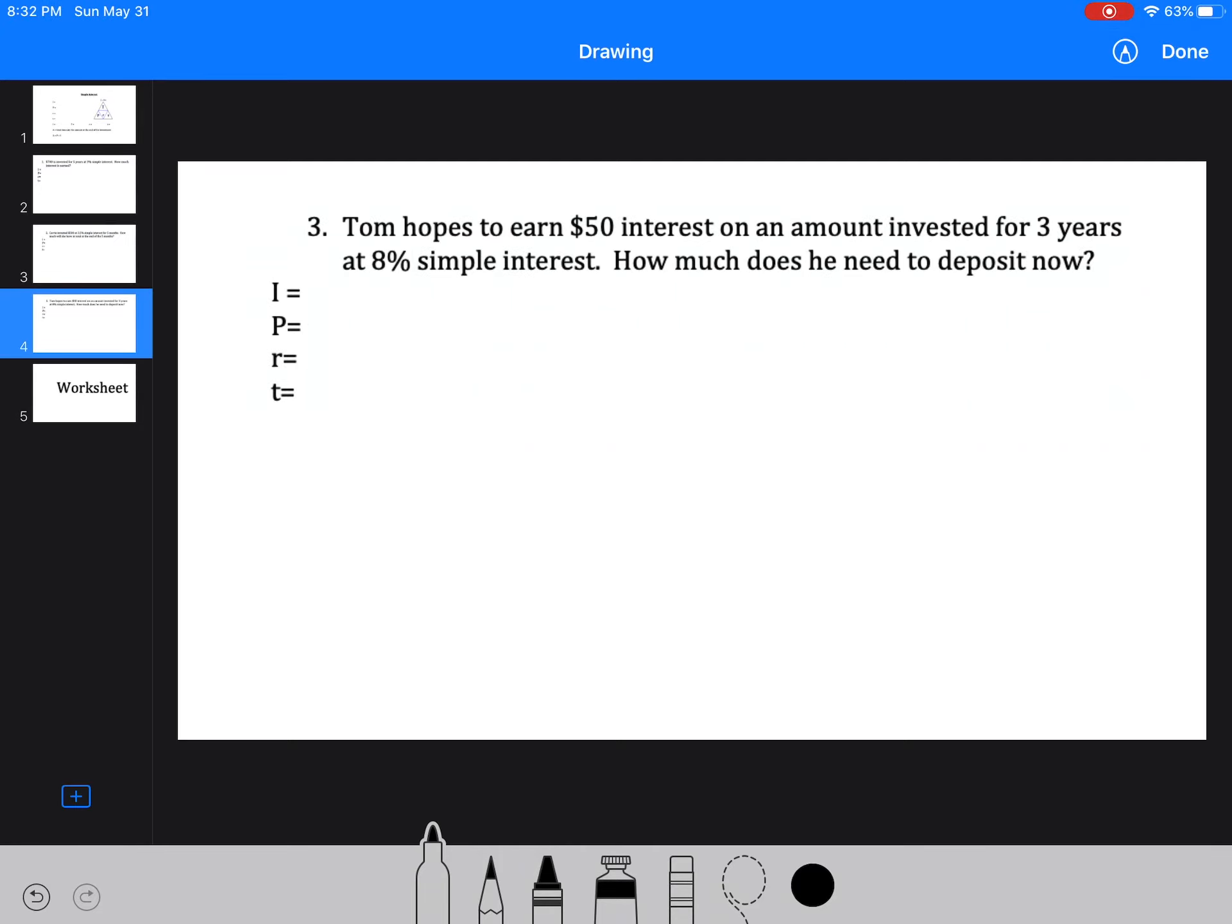Next one. We've got Tom hopes to earn $50 interest. So we know he wants to have $50. He's investing for three years. Well, that's our time. And we know a rate of simple interest is 8%. Well, that's going to be 0.08. So what we're looking at here is he needs to find what the principal is. How much does he have to deposit now?